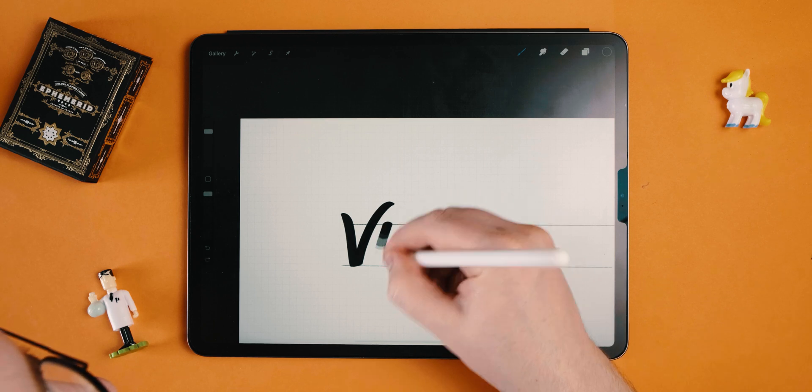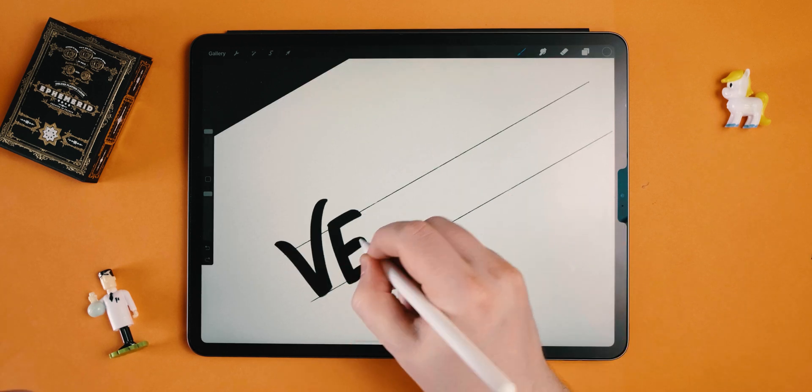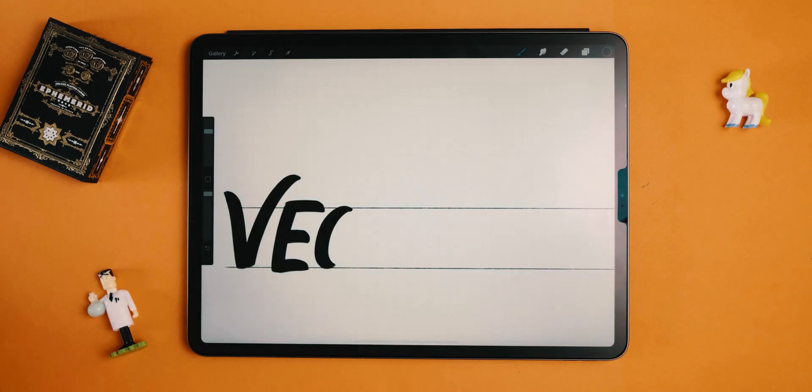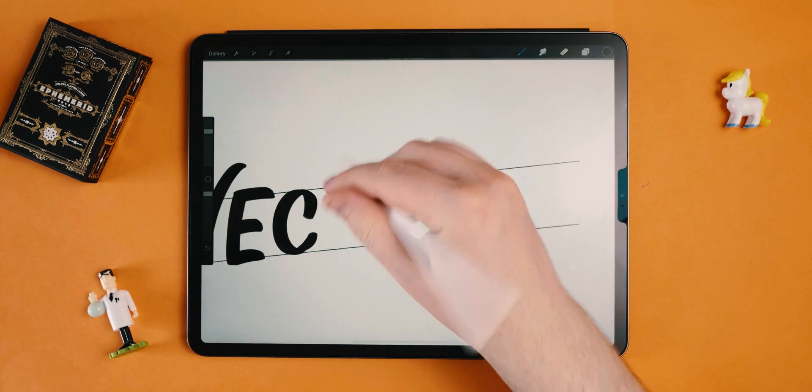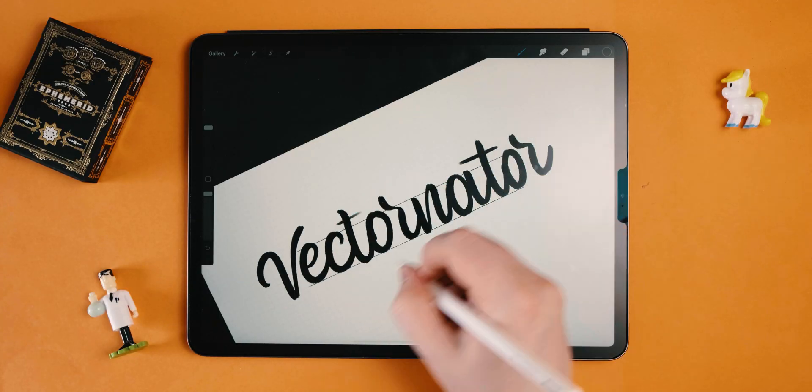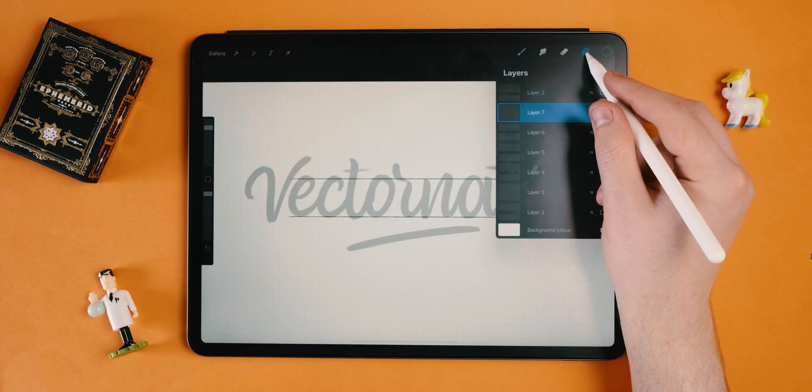The biggest challenge for me vectorizing this was getting the R's to look good against the rounded O's because they can be slightly tricky sometimes especially when they don't connect. Once I got the actual lettering done or the logo with the brush pen done I went ahead and created a new layer and I lowered the opacity of the first.